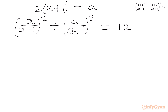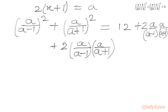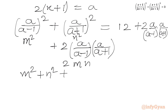Now we add 2 × (a/(a−1)) × (a/(a+1)) to both sides. On the left-hand side, if we consider m = a/(a−1) and n = a/(a+1), then m² + n² + 2mn = (m+n)². So the LHS becomes (a/(a−1) + a/(a+1))².